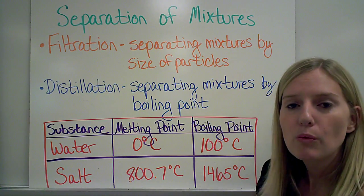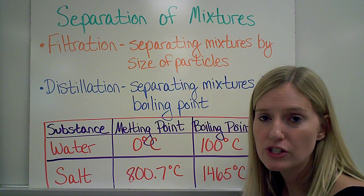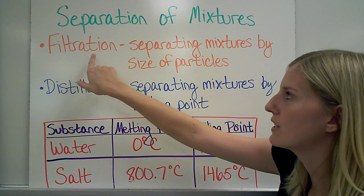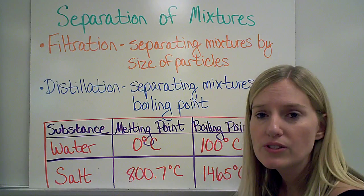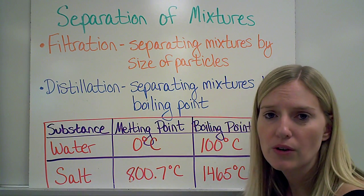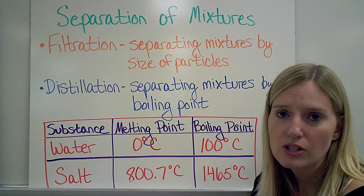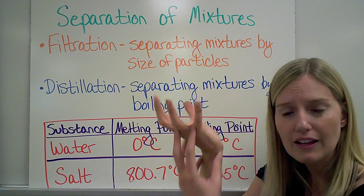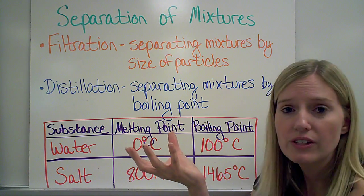I've already mentioned to you one way that I can separate a mixture, and that's by filtration. So that's when I use the size of the particles to separate them. So if I use a colander to collect the noodles and let the water come through, that's using filtration.